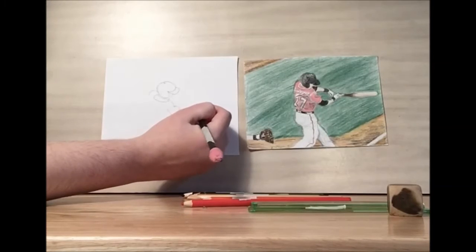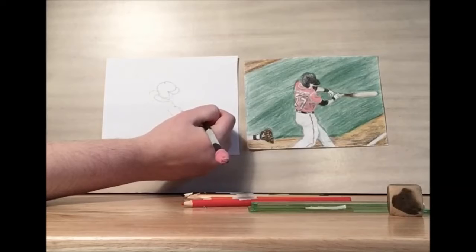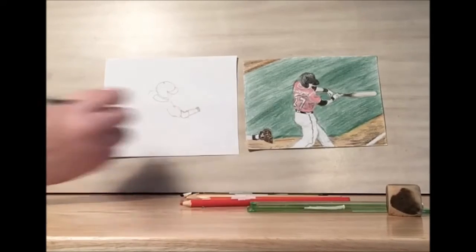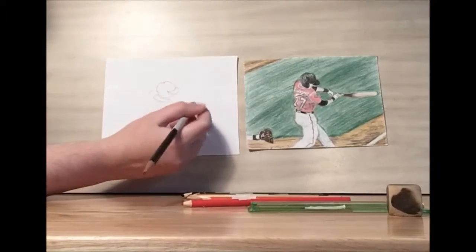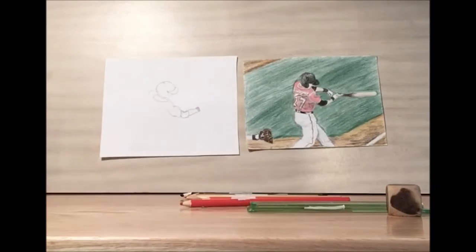The thing about drawing people is we see people every day. So we know if something looks right or not. So as you're going along you're going to want to check, take a step back, make sure that it looks right to you. And if it doesn't then just make adjustments. Everybody's going to be different though. So you might have a taller player or a shorter player. As long as the bones look like they should be in the right spot, that's the main thing.